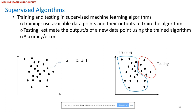By supervised we mean the outputs are available — for example, categories can address a clinical condition. We divide them into training and testing data points, where training data points are used to train the algorithm and testing are used to test the trained algorithm. Since our data repository is supervised, we have the real privilege of having real outputs of all our data points, including testing data points. So we can compare our estimation to real values and measure accuracy percentage or an error.